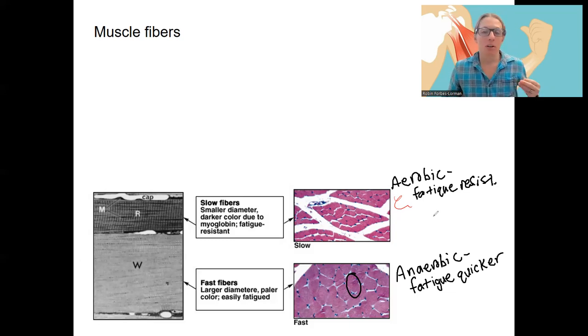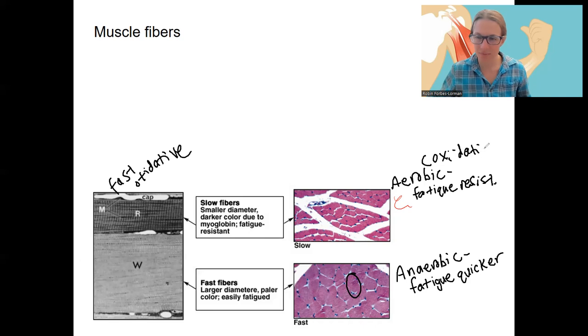So those are the two big classifications. There are fibers that are fast oxidative. Oxidative means aerobic. And anaerobic, the other word for that is glycolytic. So breaking down glucose, glycolytic.